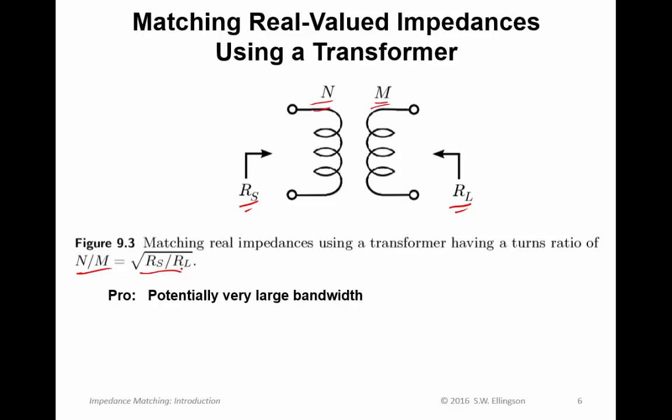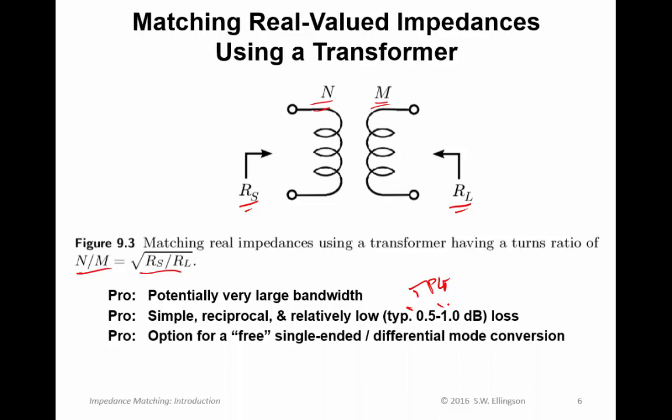So you can convert impedances into other impedances simply by selecting the correct ratio of turns on either side of the transformer. So this has the advantage of having very large bandwidth because transformers tend to have large bandwidth, not as large as resistors, because there's various imperfections in coils that cause them to have reactances, which are bandwidth limiting. But nevertheless, very large bandwidths, maybe bandwidths on the order of two to one, for example. They're simple, they're reciprocal, in the sense that you can turn them around in a circuit and they work the same way, and relatively low losses.